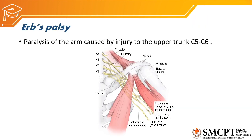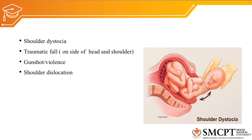Erb's palsy is paralysis of the arm caused by injury to the upper trunk at C5 and C6. The main cause is stretching where the neck moves far from the shoulder, or extreme depression of the shoulder. The most common cause is shoulder dystocia. Other causes include traumatic fall on the side of the head and shoulder in adults, gunshot injury, violence, and shoulder dislocation, which can injure the upper trunk or lateral cord.